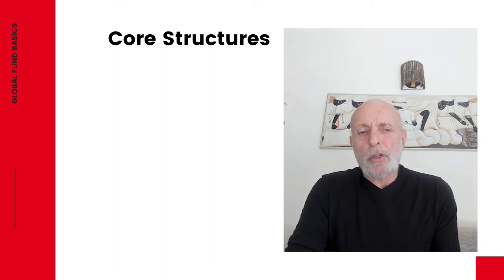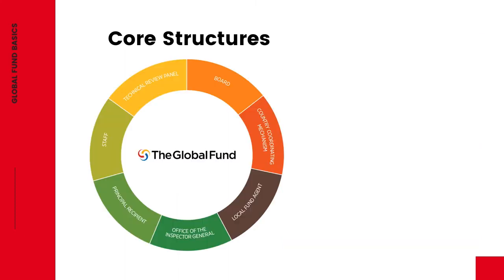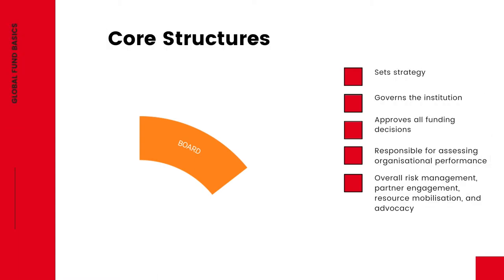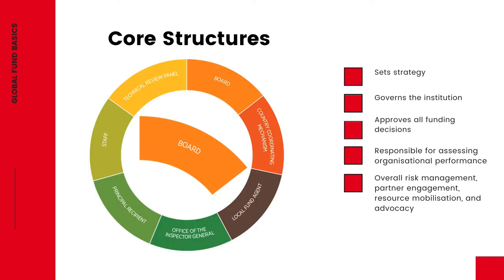Now let's look at the core structures of the Global Fund. First, there's the Board. The Board sets strategy, governs the institution, and approves all funding decisions. It is also responsible for assessing organizational performance including the performance of the Executive Director, overall risk management, partner engagement, resource mobilization, and to some degree advocacy.